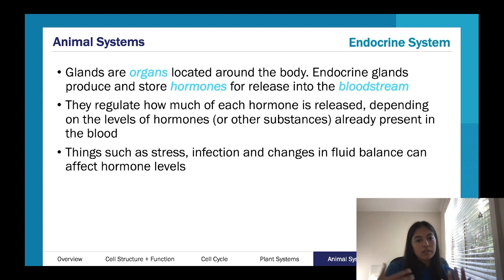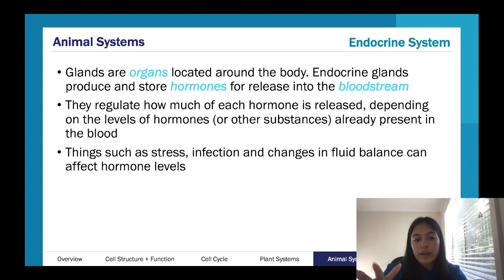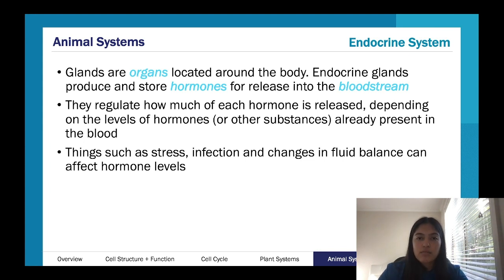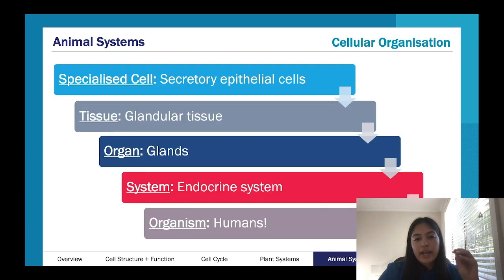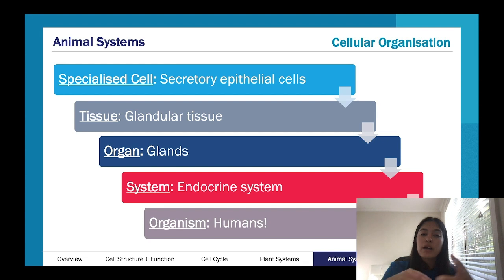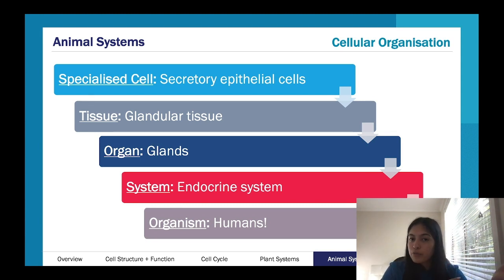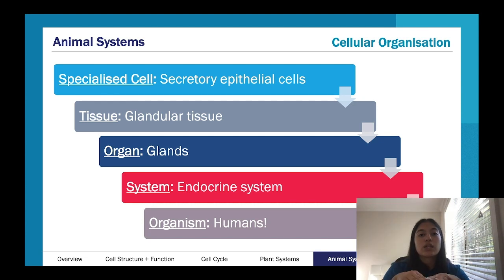In terms of glands, we think about controlling how much of each hormone is released, which depends on what is triggering the hormone release and how much hormone is already there. Things that affect hormone release include changes in fluid balance, infections, stress, and age. Wherever the glands are, they'll have special epithelial cells that are secretory — they produce protein hormones and export them from the cell. These secretory cells make up our glands, and these glands form our endocrine system.